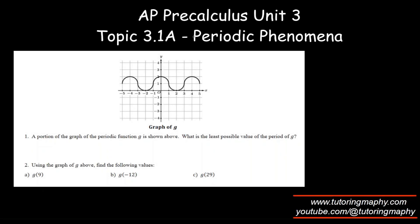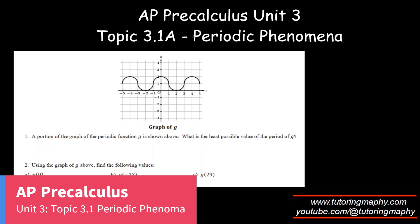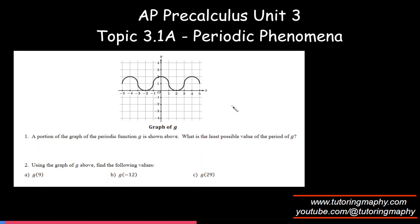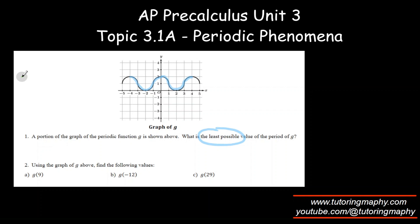A quick review on unit 3, topic 3.1 periodic phenomena. A portion of a graph is given that is periodic in nature. The period is the value of the independent variable after which the function repeats itself. The curve repeats after various intervals, so the least possible period is from negative 4 to 0, which is 4 units.